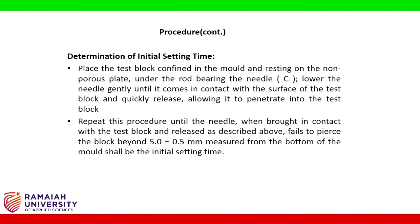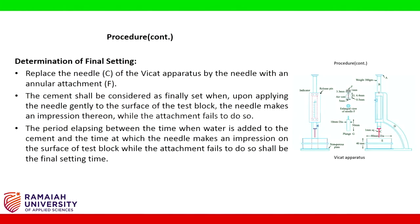Determination of initial setting time: Place the test block confined in the mold and resting on the non-porous plate under the rod bearing needle C. Lower the needle gently until it comes in contact with the surface of the test block and quickly release, allowing it to penetrate. Repeat this procedure until the needle fails to pierce the block beyond 5 ± 0.5 mm measured from the bottom of the mold. That time shall be the initial setting time.